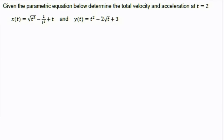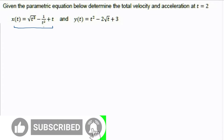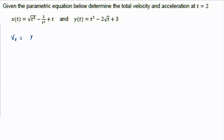We are given parametric equations and need to find the total velocity and acceleration at t equal to 2. There are two components: the x component and the y component of velocity, and the same applies for acceleration. So let's first talk about velocity — velocity in the x component will be x prime of t.